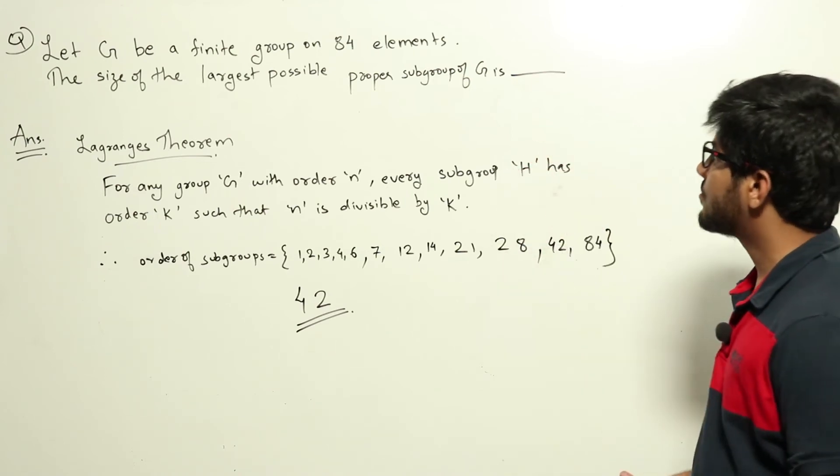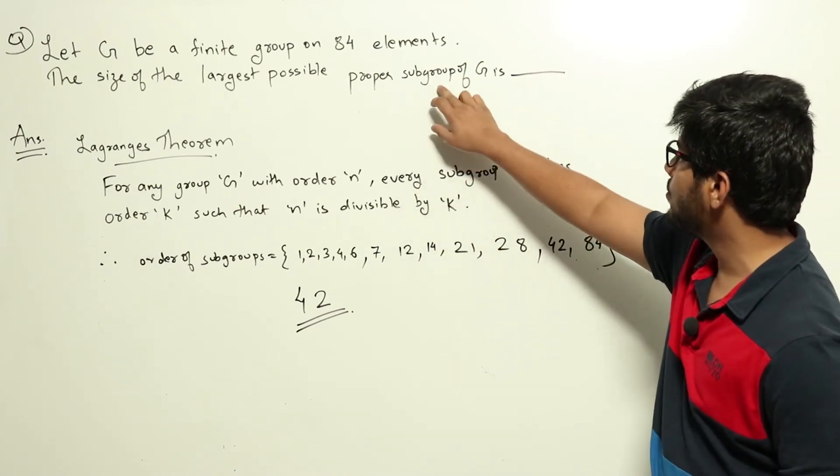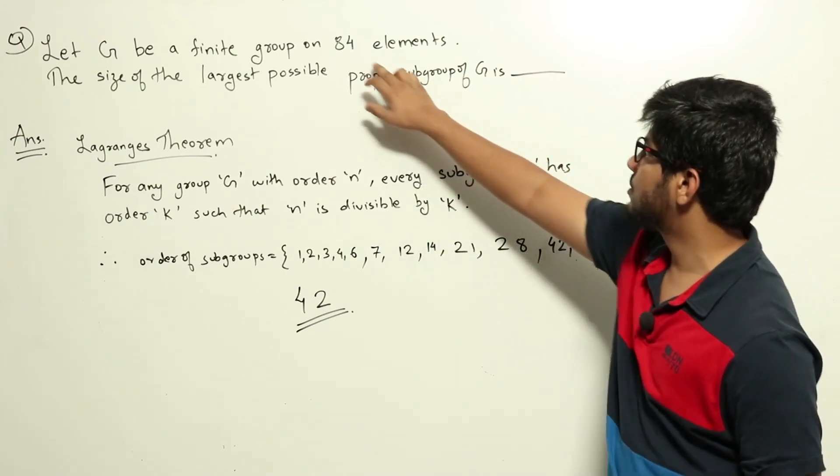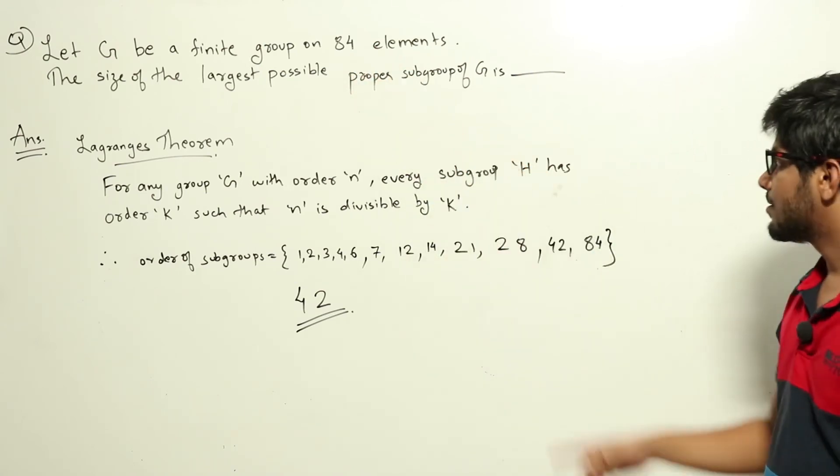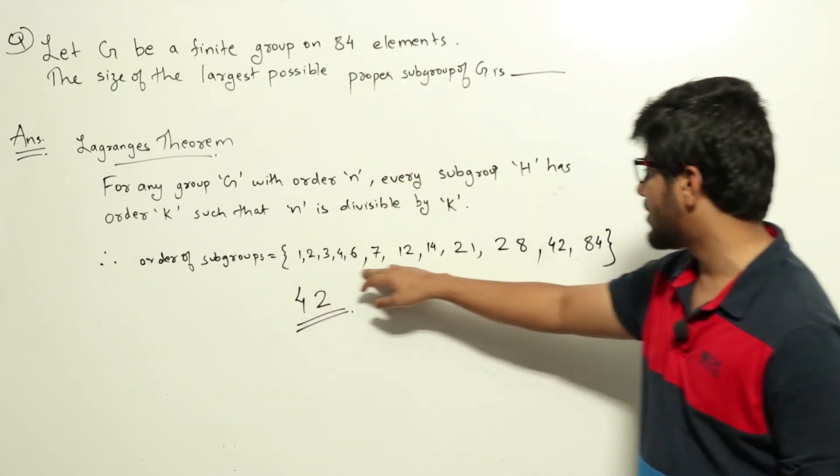From this we know that the order of the subgroup should be dividing 84, which means the order of the subgroup has to be one among these factors.